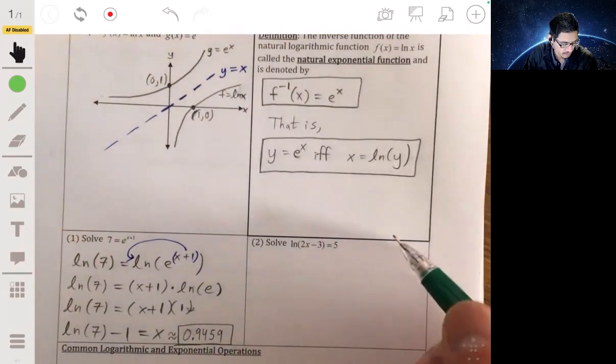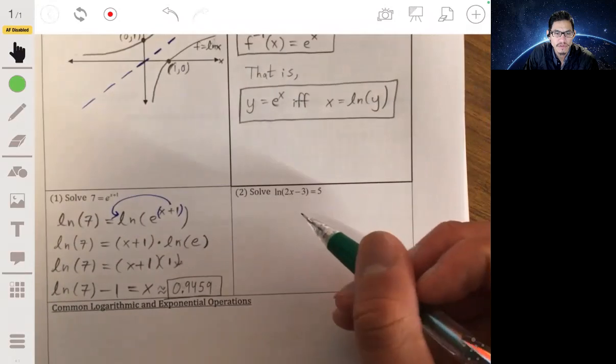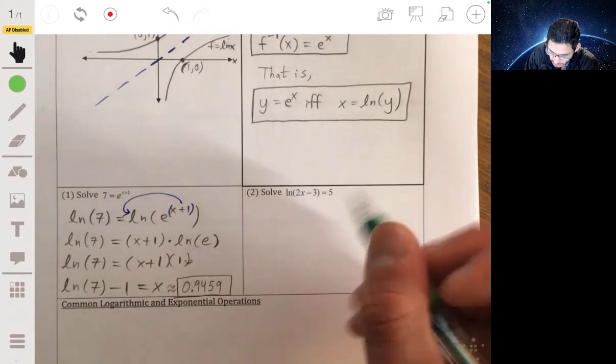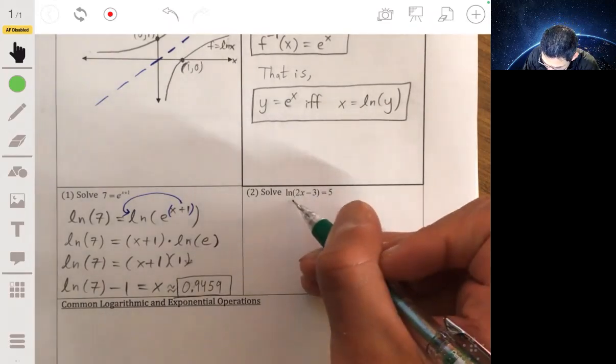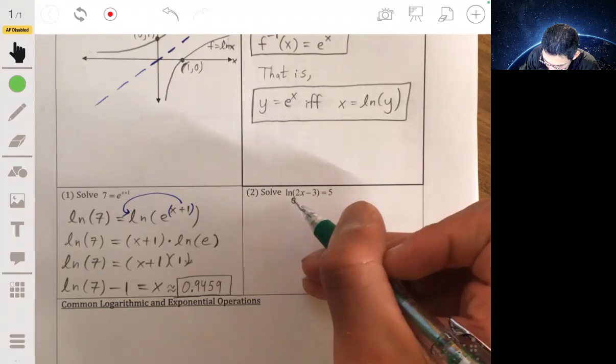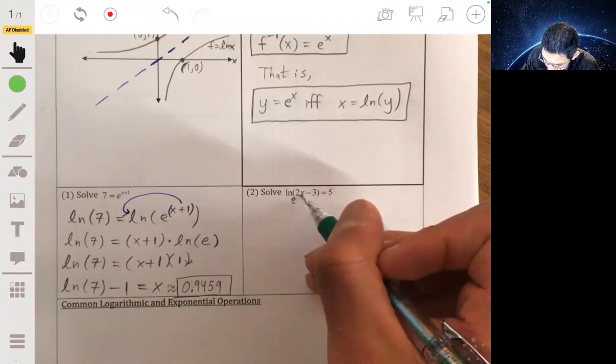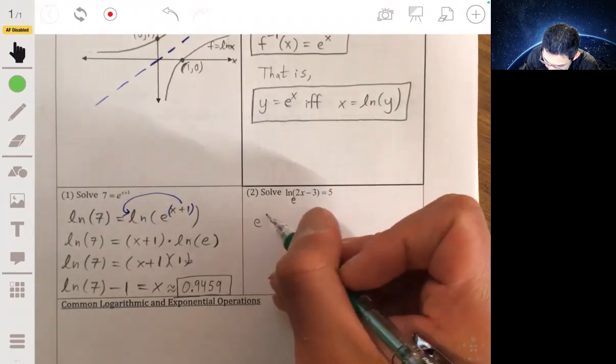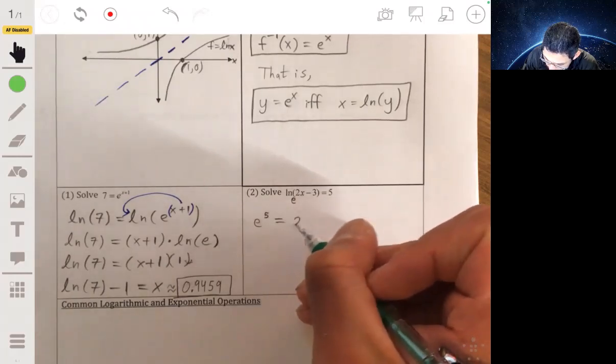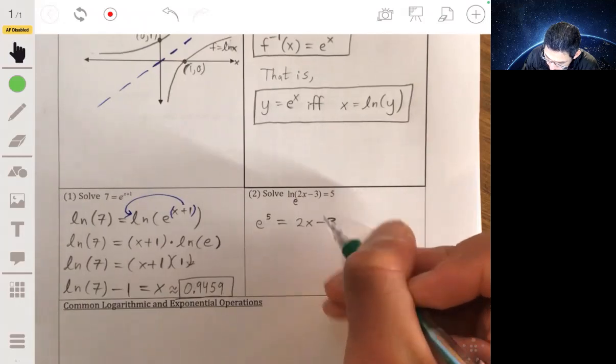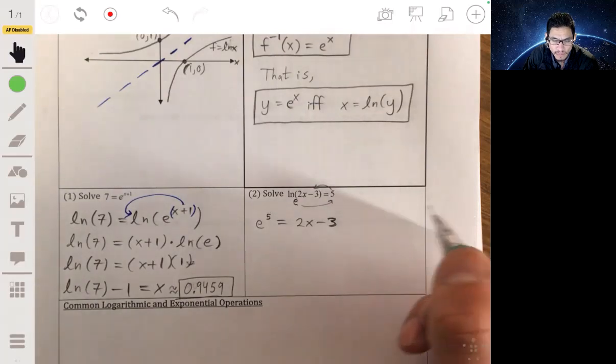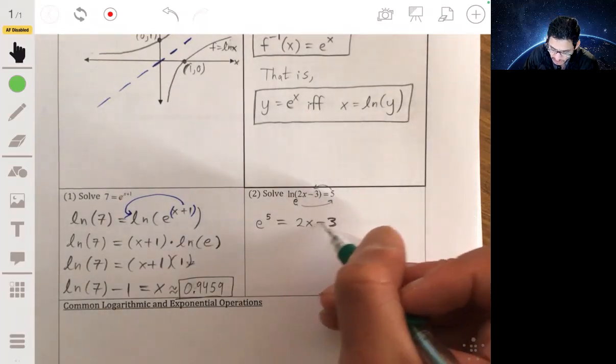All right, let's look at this next one. Solve the natural log of 2x minus 3 being equal to 5. Remember, there's a base here. And it's not going to be written explicitly, but the base here is e. And it's natural log. So e to the 5 equals 2x minus 3. That's what this equation is basically representing.